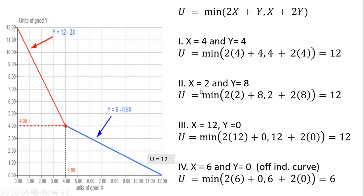Let's try another point: x equals 2 and y equals 8. That should give us 12 units of satisfaction. Plugging into the utility function: 2 times 2 plus 8 equals 12 on the left side. On the right-hand side, with x equals 2 and y equals 8, we get 2 plus 16 equals 18. Since utility is the minimum of those two numbers, the minimum of 12 and 18 is 12. So indeed at y equals 8 and x equals 2, utility is 12.